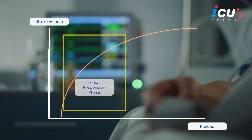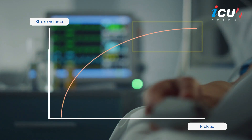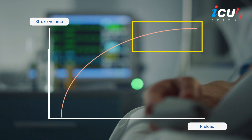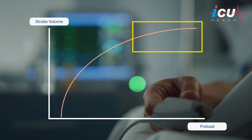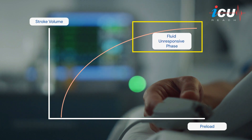Here's the catch: at a certain point, the heart reaches its limit. It can't stretch any further, and additional fluids won't improve cardiac output. This is where the patient becomes fluid non-responsive. Giving more fluid here might not help, and can even cause harm, leading to issues like pulmonary edema.